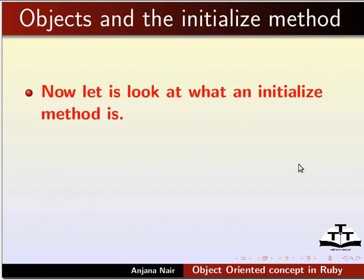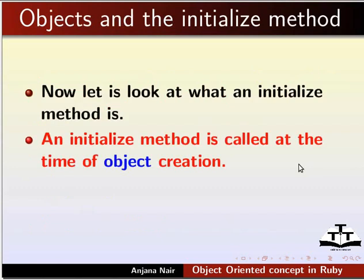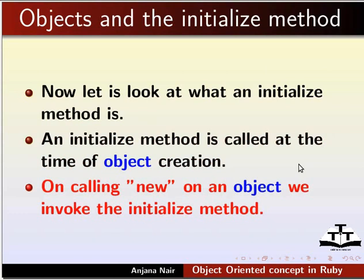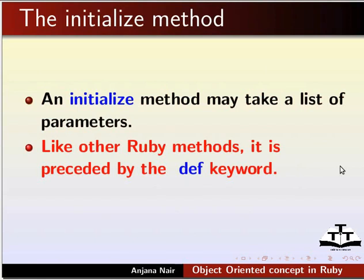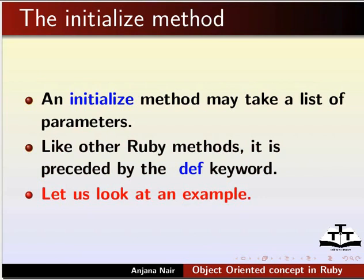Now let us look at what an initialize method is. An initialize method is called at the time of object creation. On calling new on an object, we invoke the initialize method. An initialize method may take a list of parameters. Like other Ruby methods, it is preceded by the def keyword. Let us look at an example.